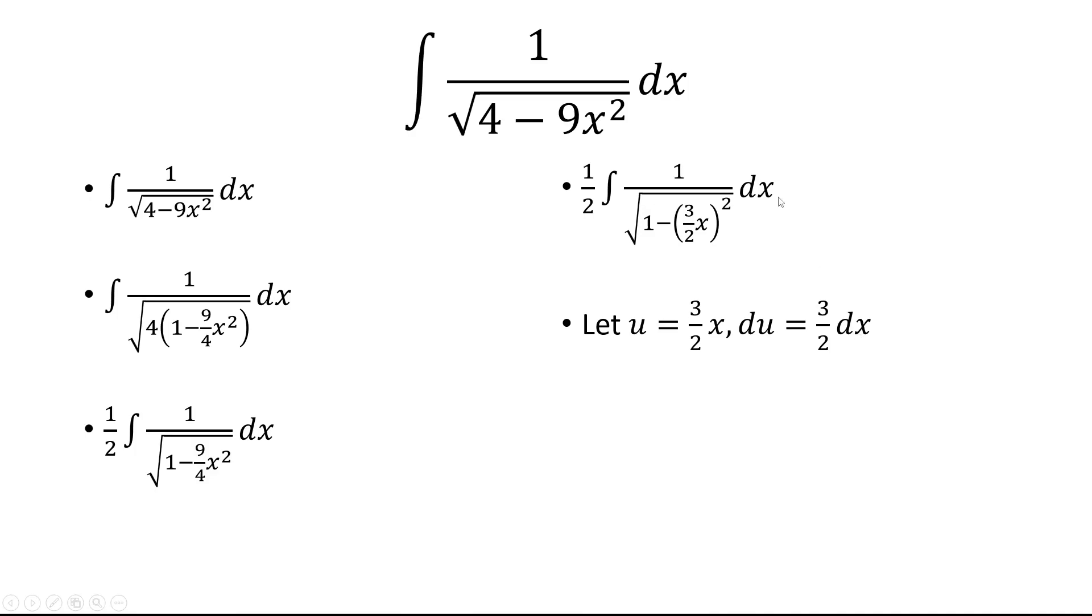But here we have 1 dx in the numerator, so we multiply both sides by 2 thirds. So we have 2 thirds du, and then 2 thirds will multiply the 1 half to get to 1 third.